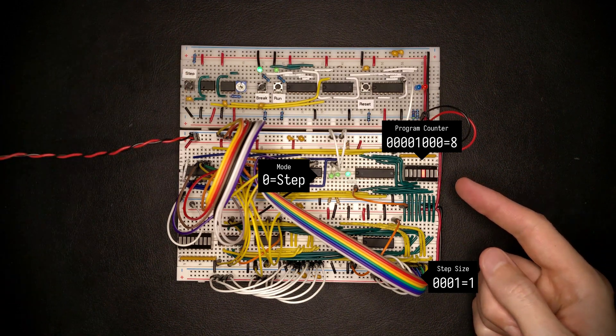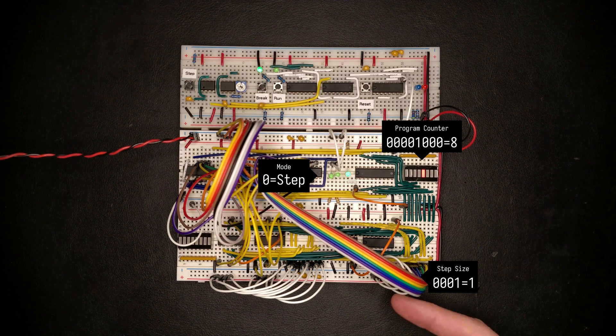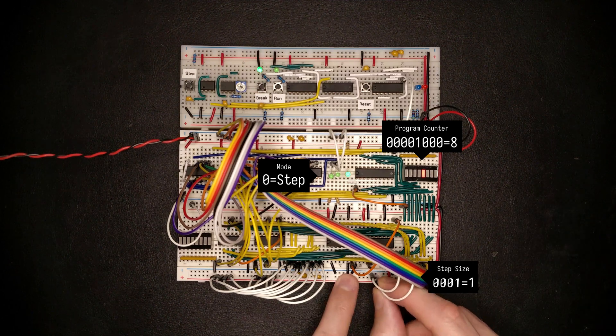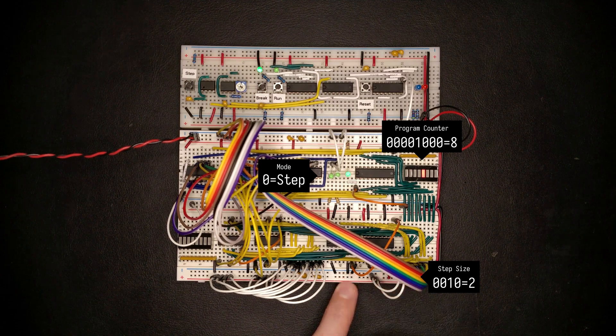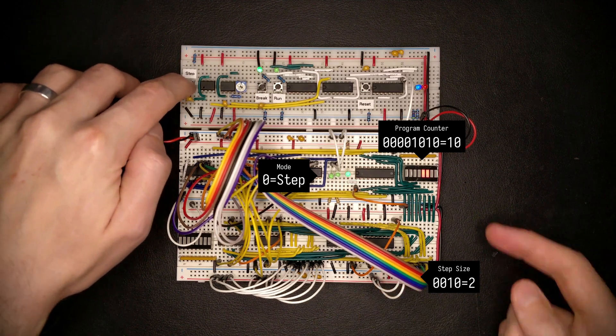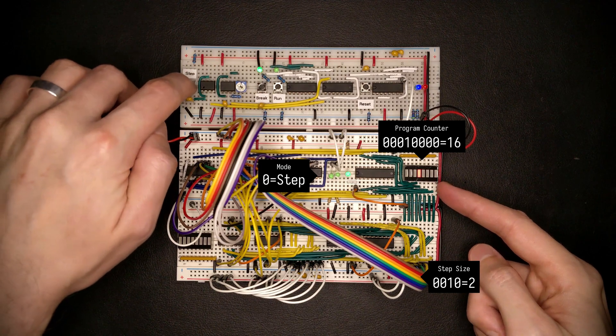So right now we have multiplexer input zero selected which is the step address counter here which computes the next instructions address. So if I hit the step button this should just be counting up in single byte increments. Nice that seems to be working and we can adjust the step size. This should be a step size of two, and sure enough this is counting by two.